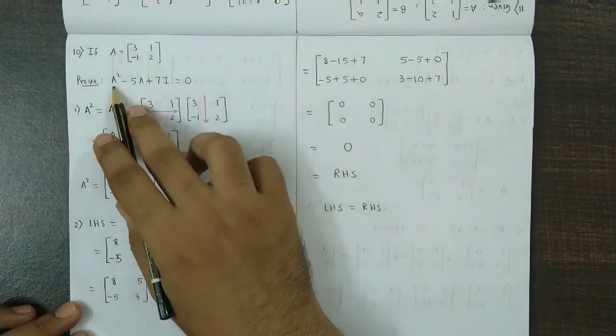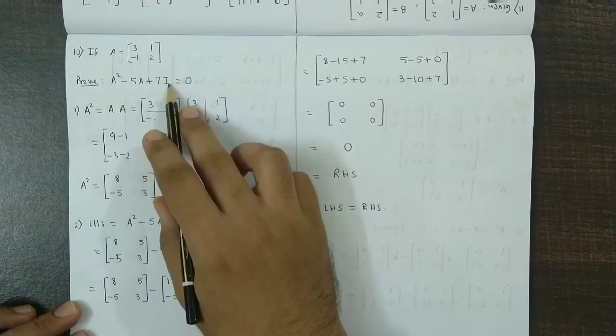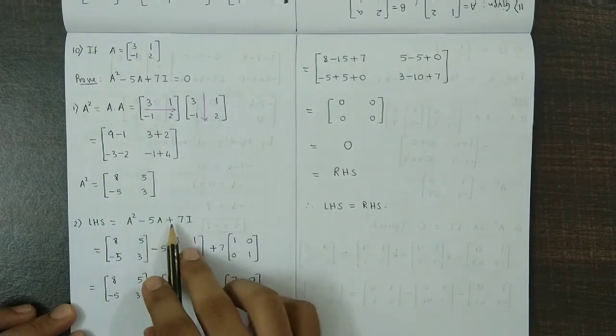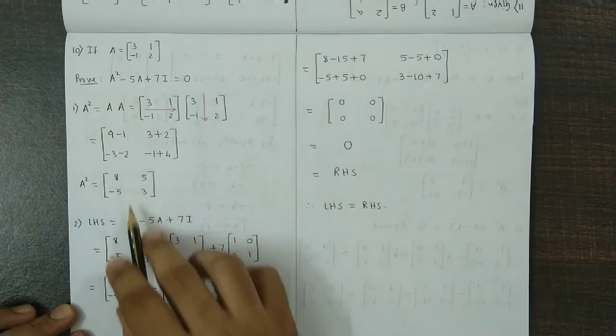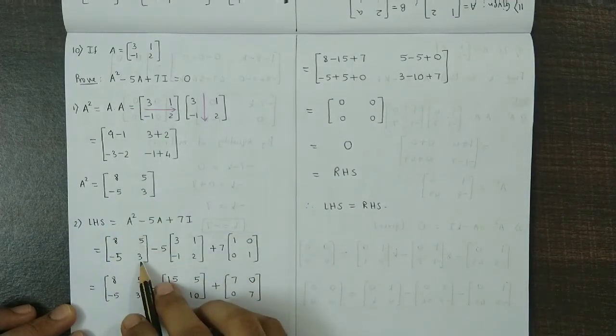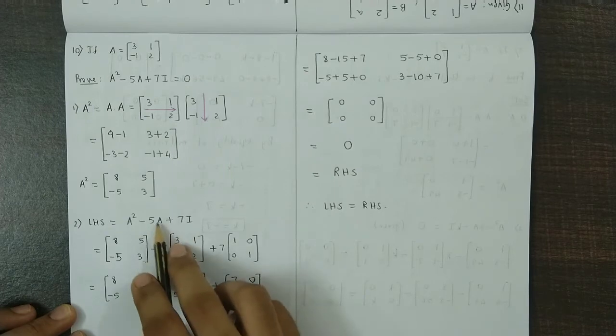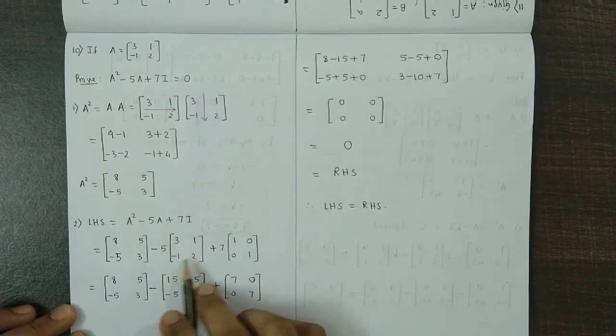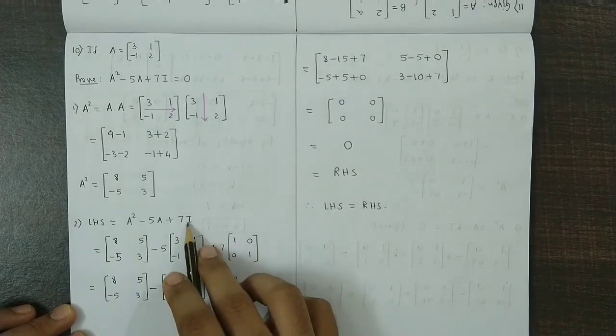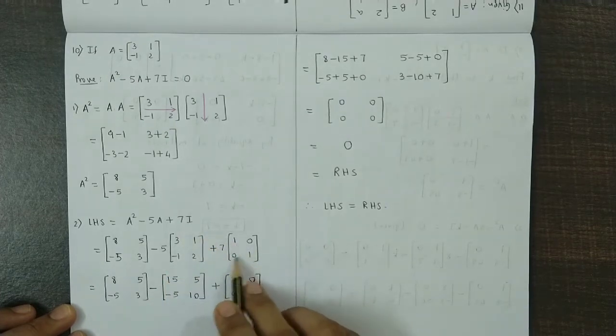We have obtained A square and now we move to the left hand side. Left hand side is A square minus 5A plus 7I. We replace the values. A square is 8, 5, minus 5, 3, minus 5 times A. A is 3, 1, minus 1, 2 plus 7I. I is the identity matrix, so it is 1, 0, 0, 1.